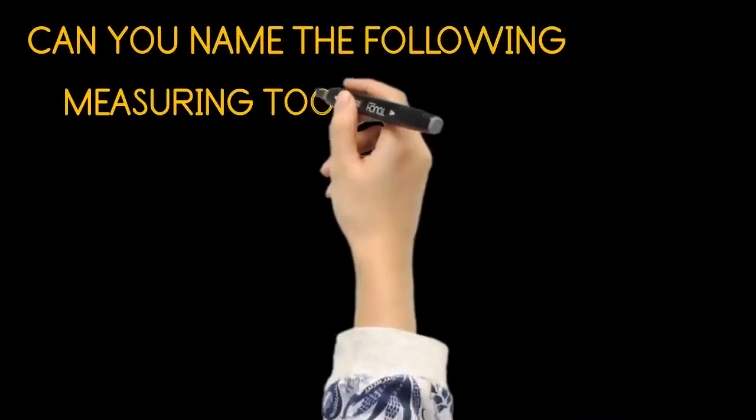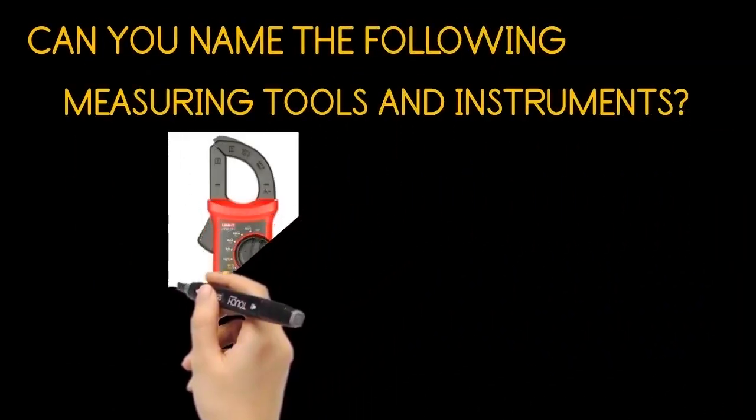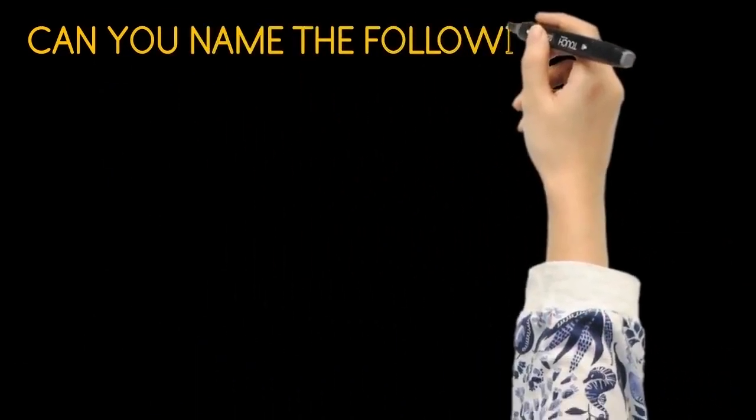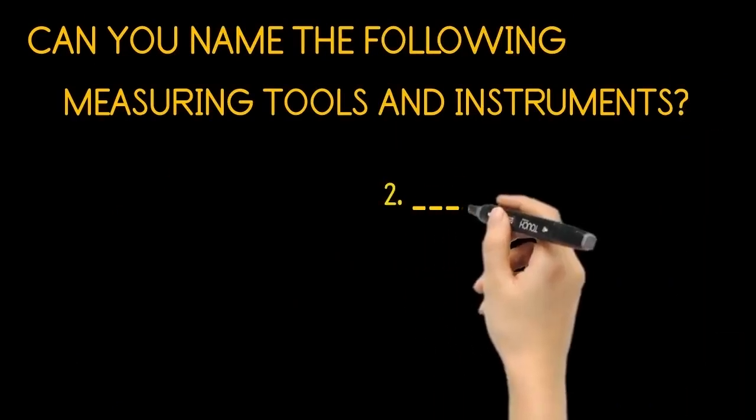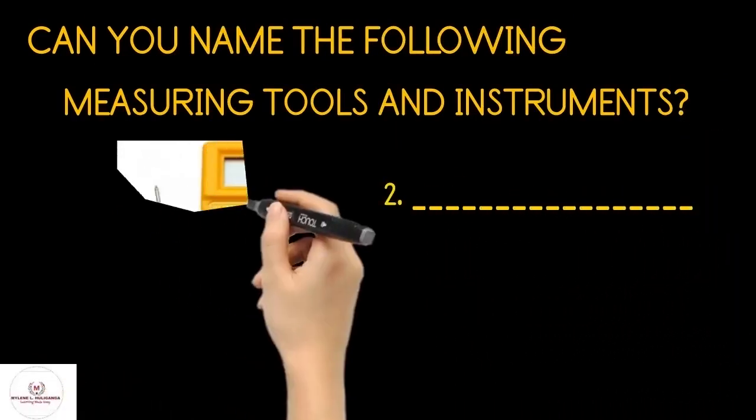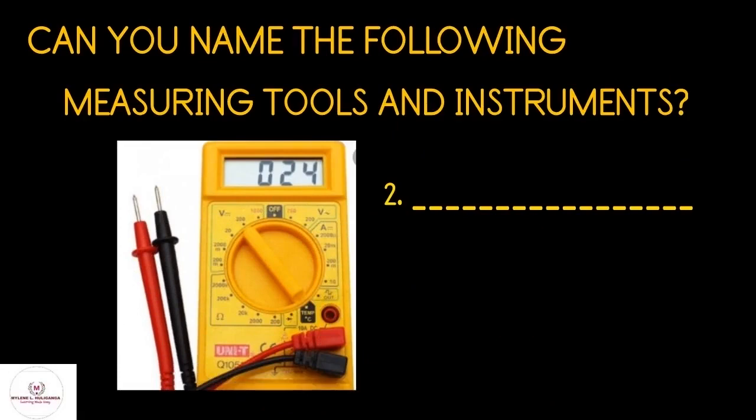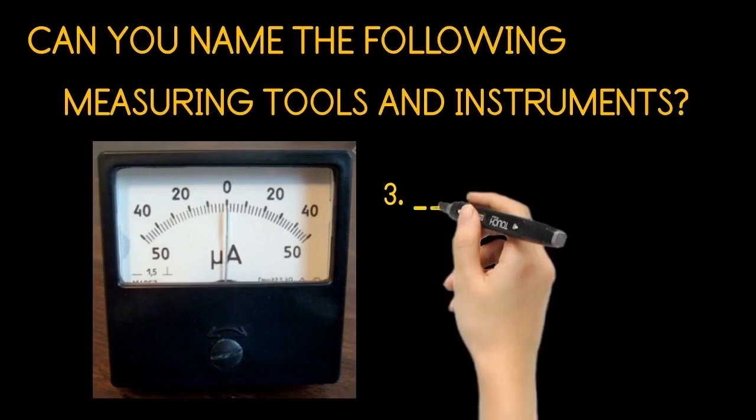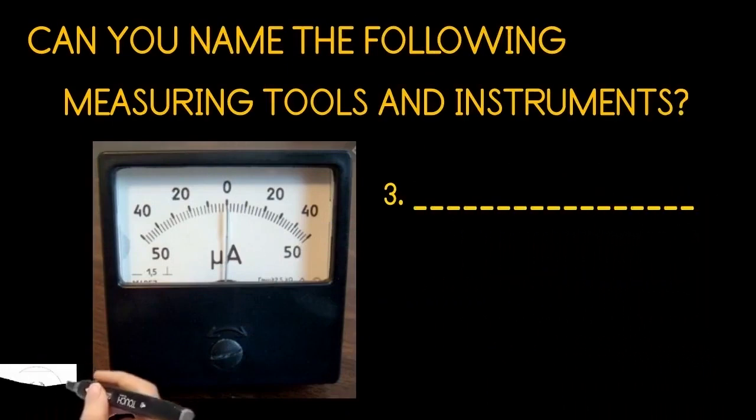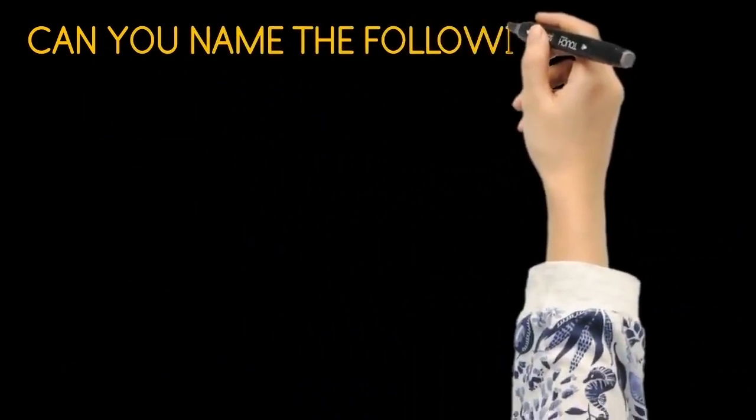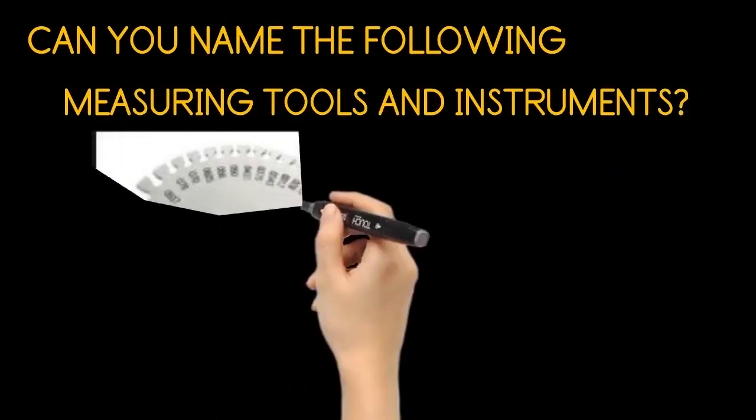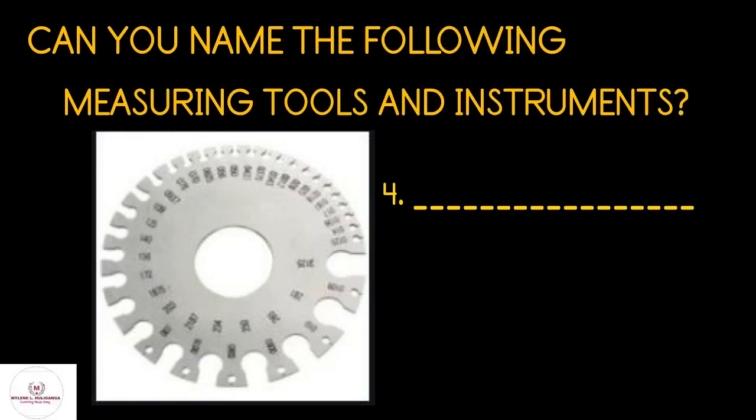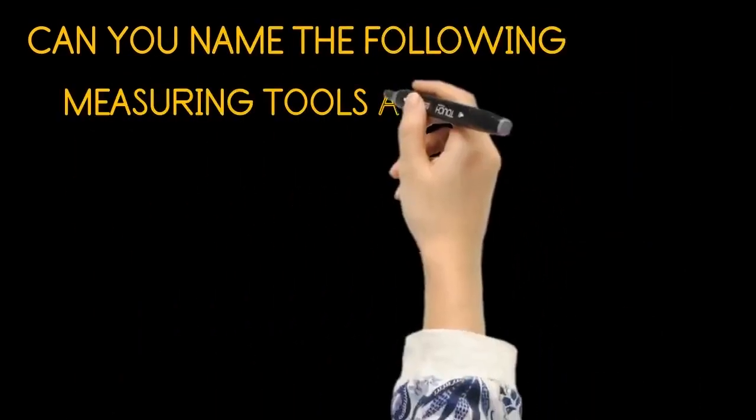Can you name the following measuring tools and instruments? Number one. Number two. Number three. Number four. Number five.